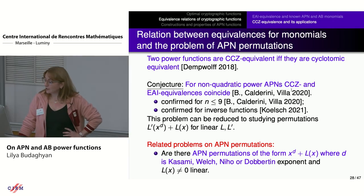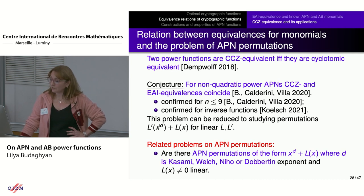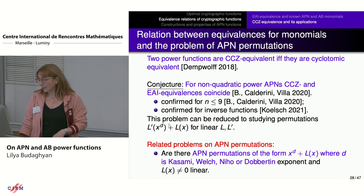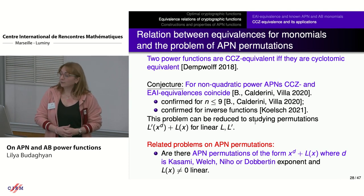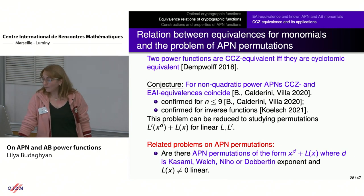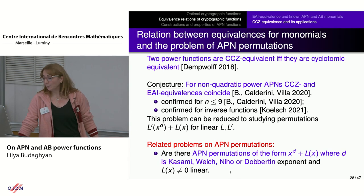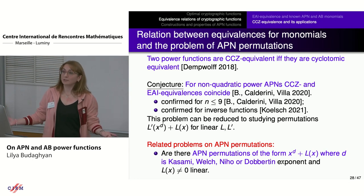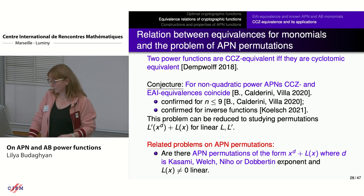Studying the relationship between CCZ and EA equivalences can be reduced to studying the existence of permutations of the form L'(x^d) + L(x) for linear functions L and L'. For power functions, when L' is the identity, this relates to the problem of APN permutations: we take the power function x^d — if it is APN — add a linear function L, and ask whether the result is a permutation. For Kasami, Welsh, Niho, and Dobertin functions, for most cases this problem is open, and solving it positively for n even would solve the big APN permutation problem.